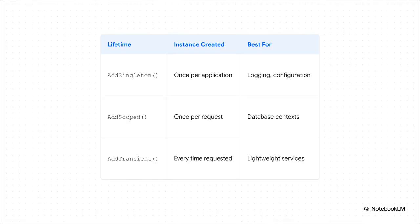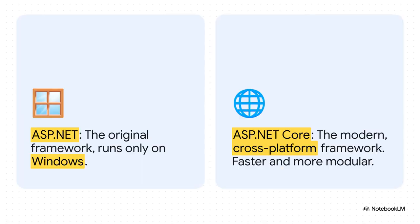Now let's talk about something absolutely critical in modern .NET: dependency injection lifetimes. Seriously, the choice you make here is huge. A singleton service is created just once for the entire life of the application. A scoped service is created once per client request. And a transient service — that's brand new every single time it's requested. Knowing which one to use and when is just essential for building efficient, scalable apps.